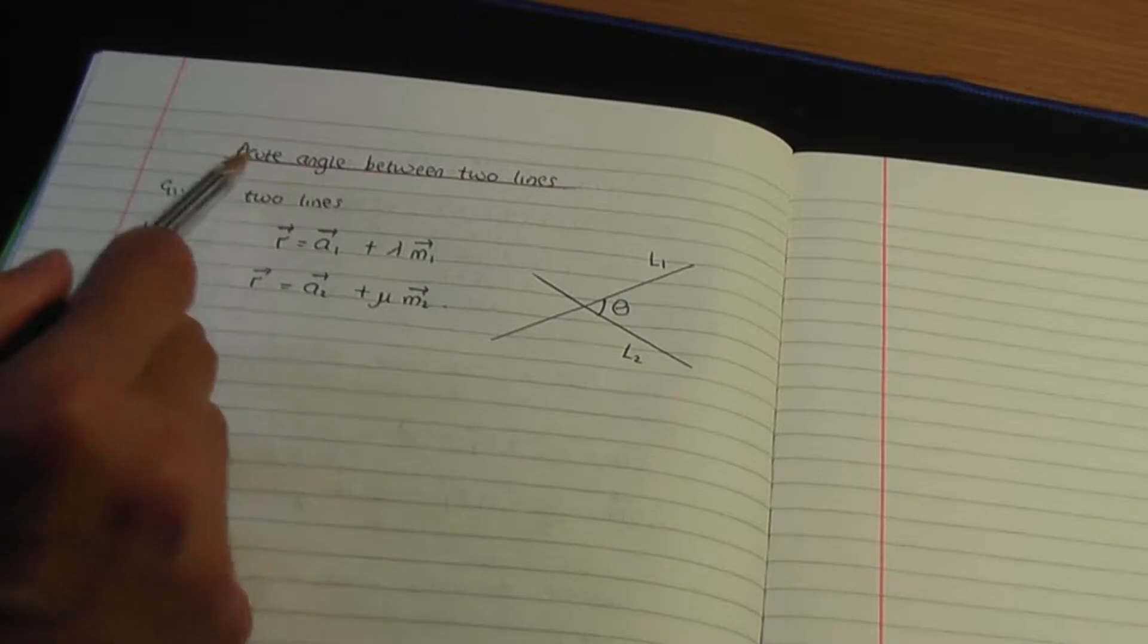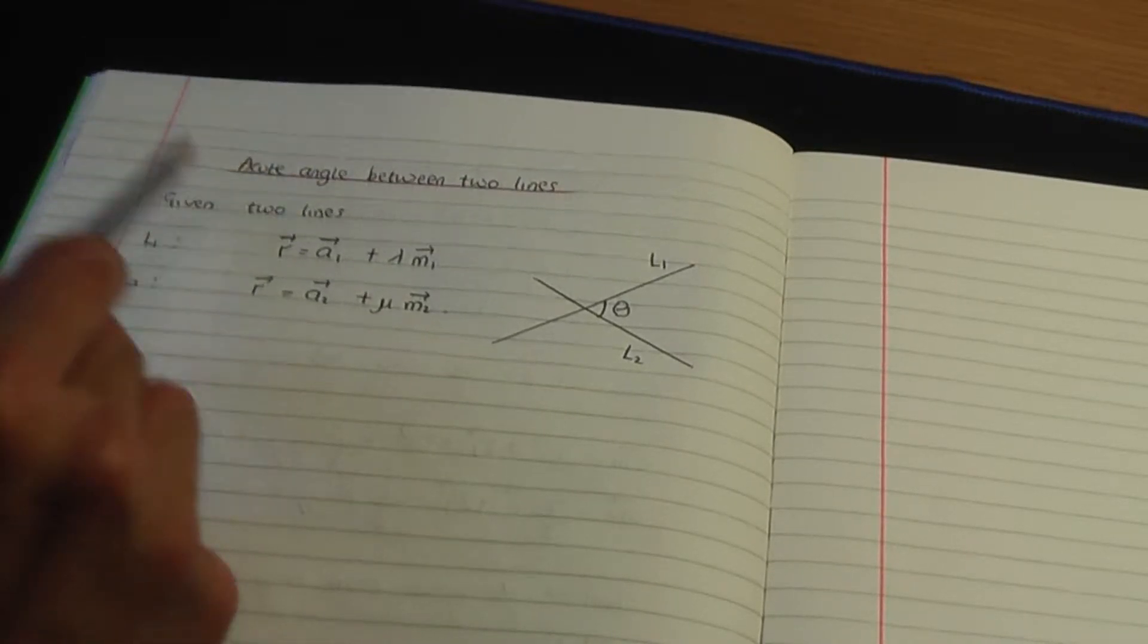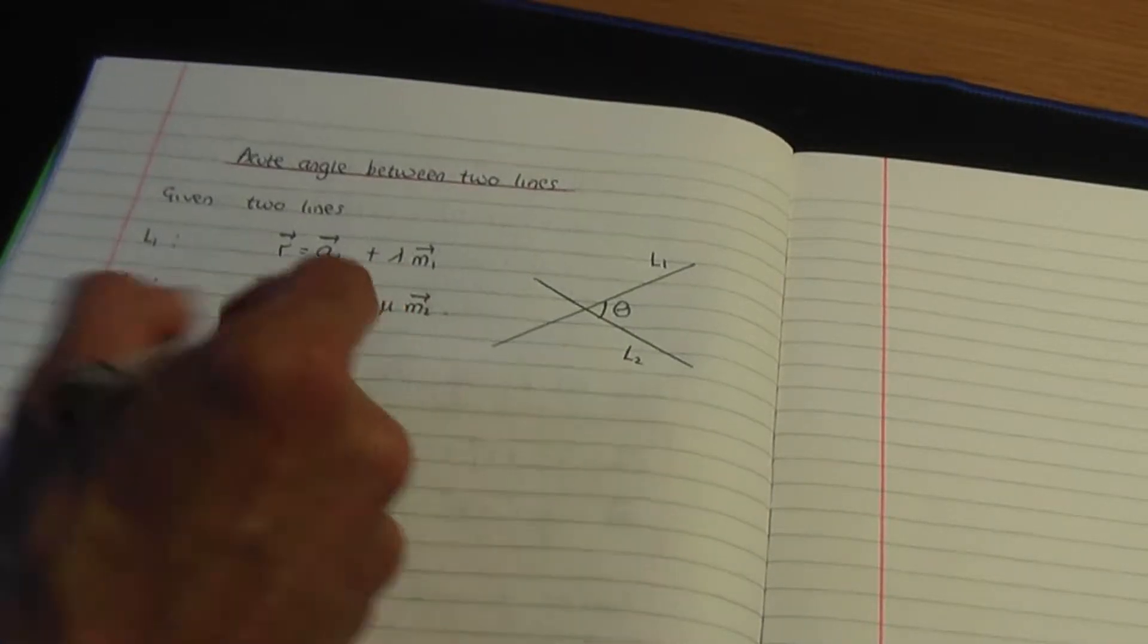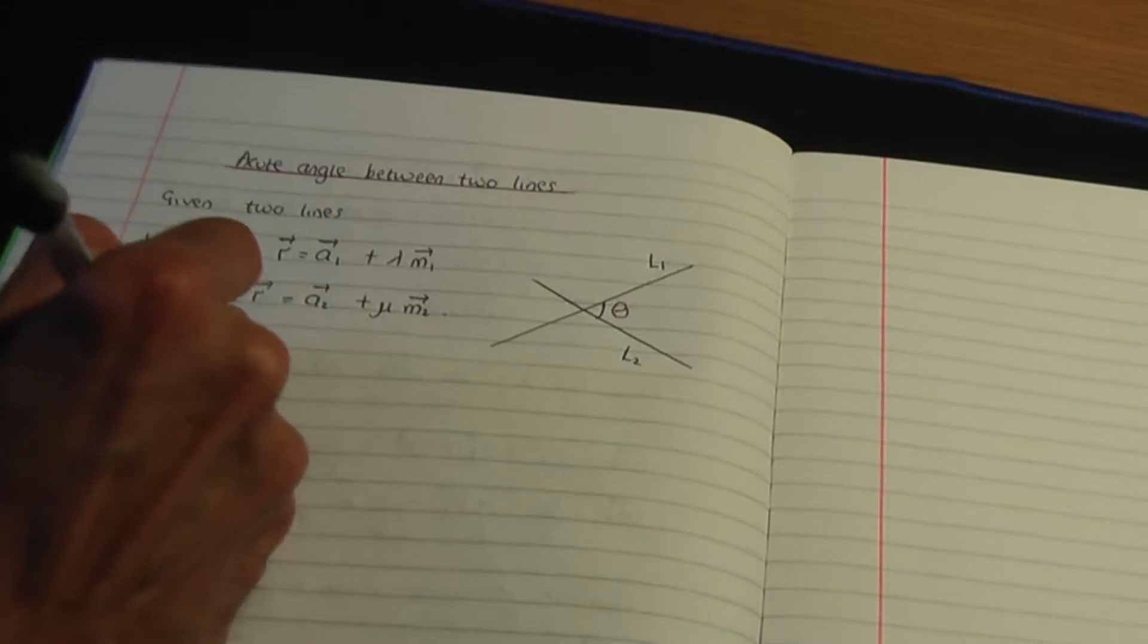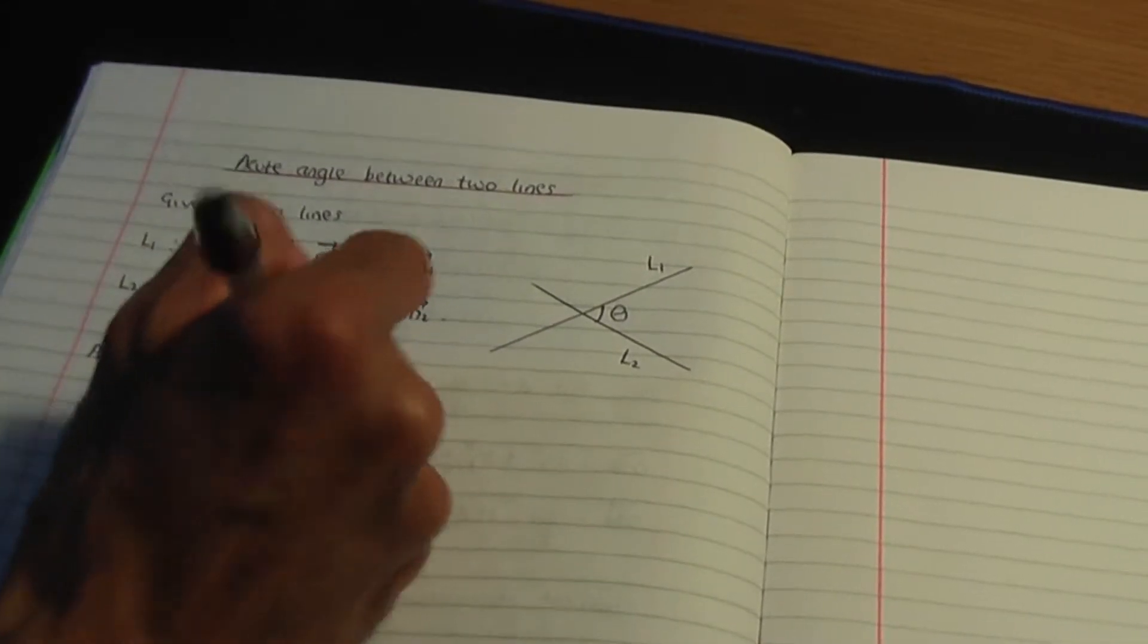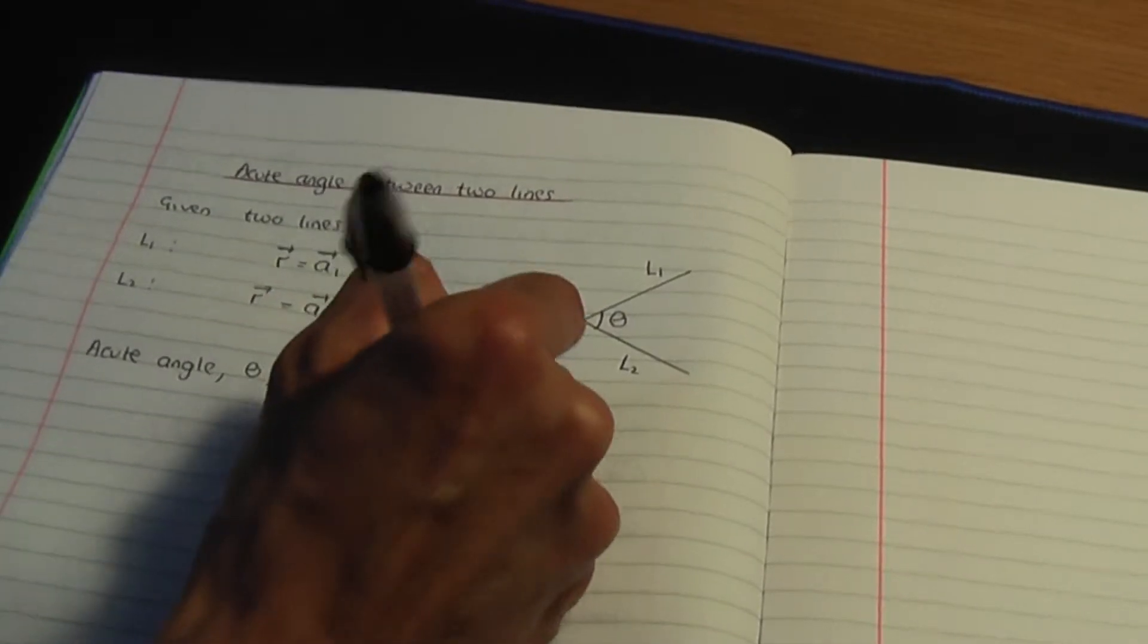And this is the result to work out the acute angle. The word acute, remember, is an angle between 0 and 90.